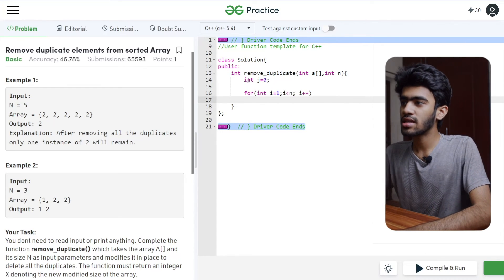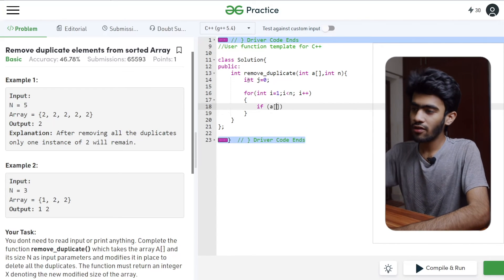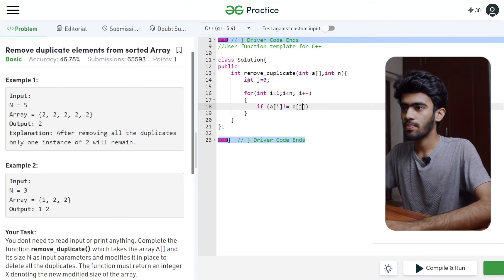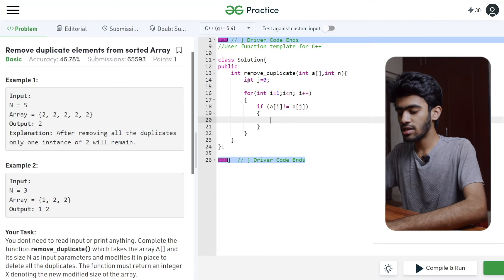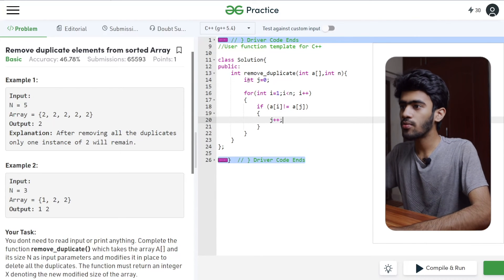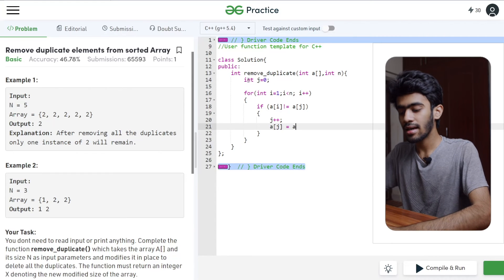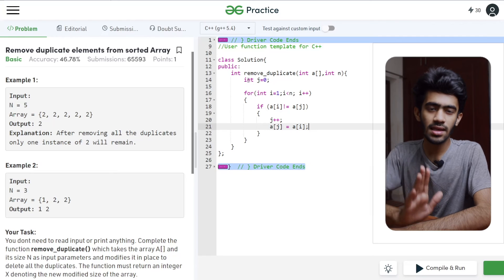Okay, in the loop, first check the condition: is a of i not equal to a of j? If we increase the value of j, we increase the value of j to a of i. So this is a filter for j pointer.